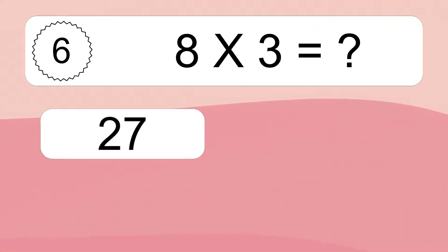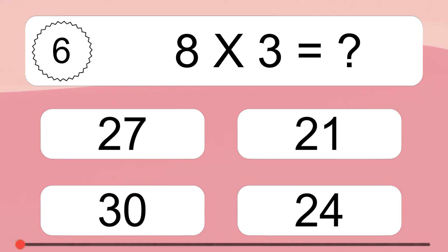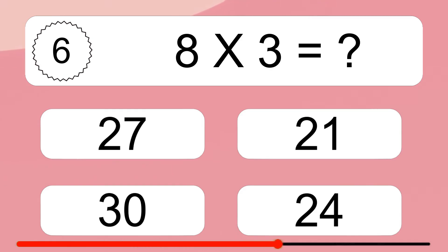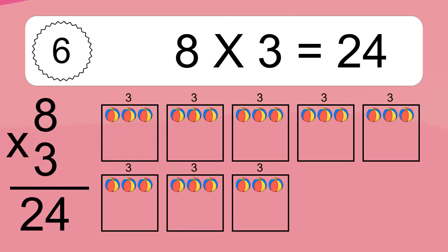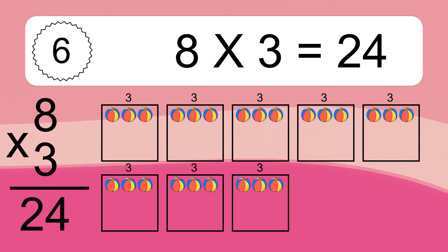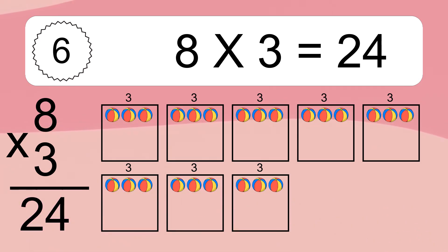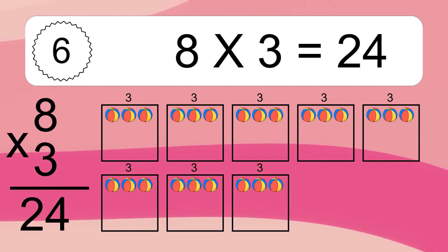8 times 3 equals what? 8 times 3 equals 24. We have 8 boxes, and each box has 3 colorful balls inside. If you count all the balls in all the boxes together, you will have 8 times 3 balls. This equals 24 balls.